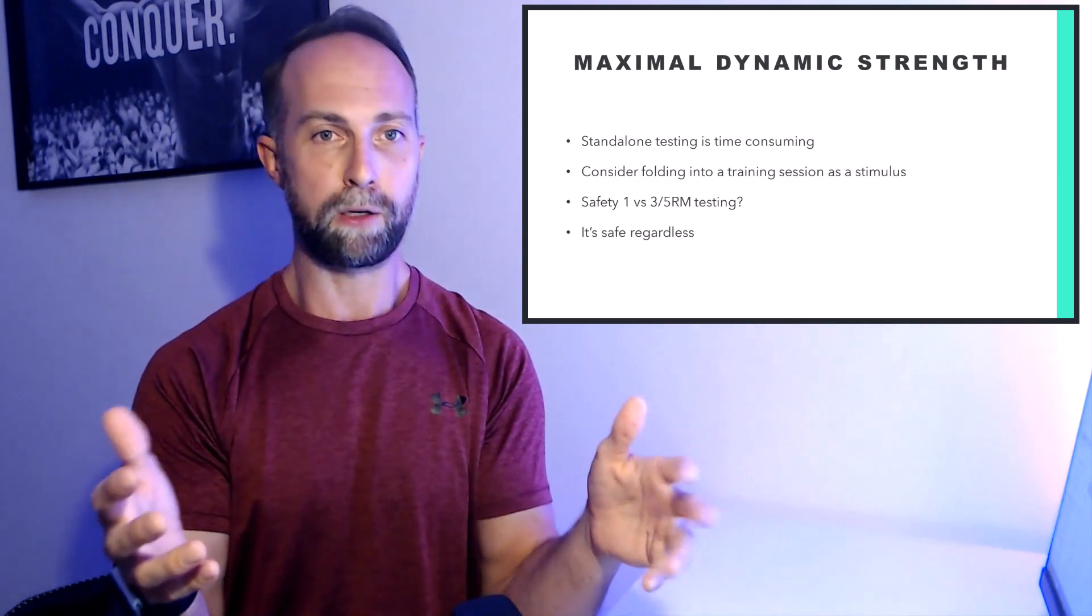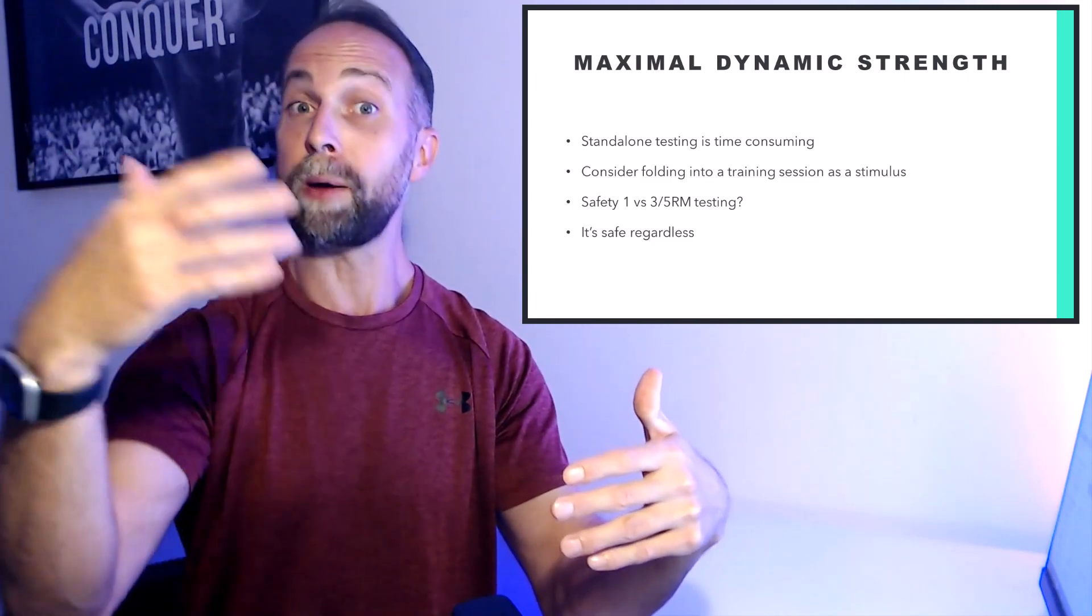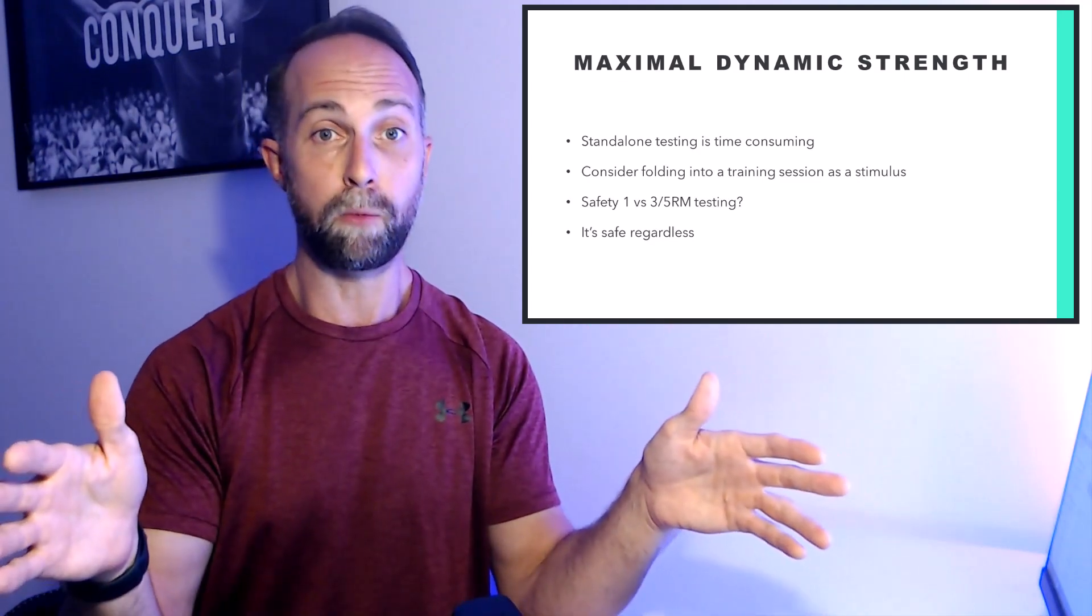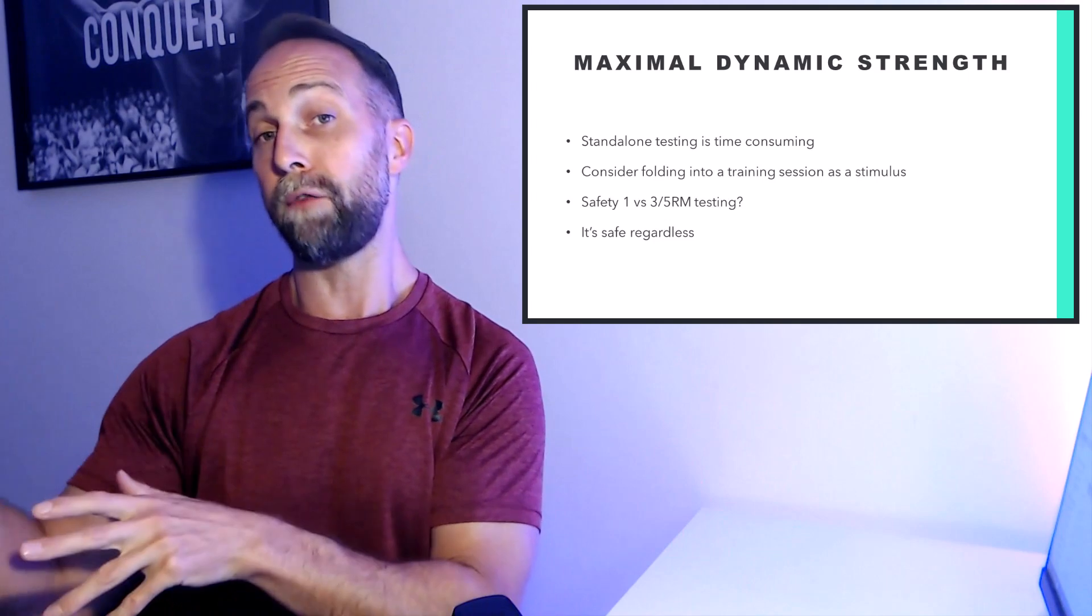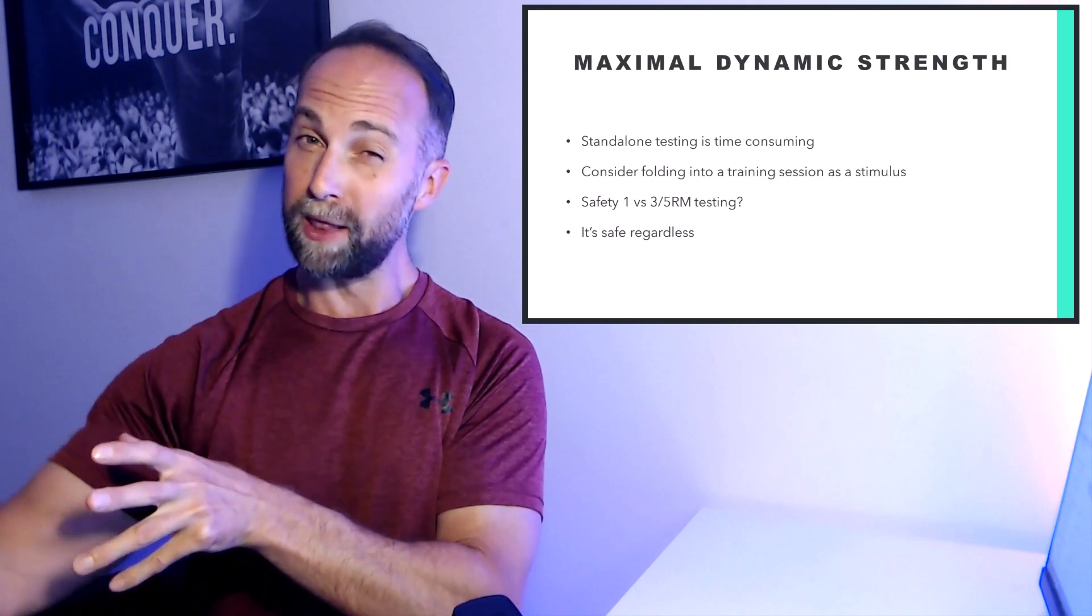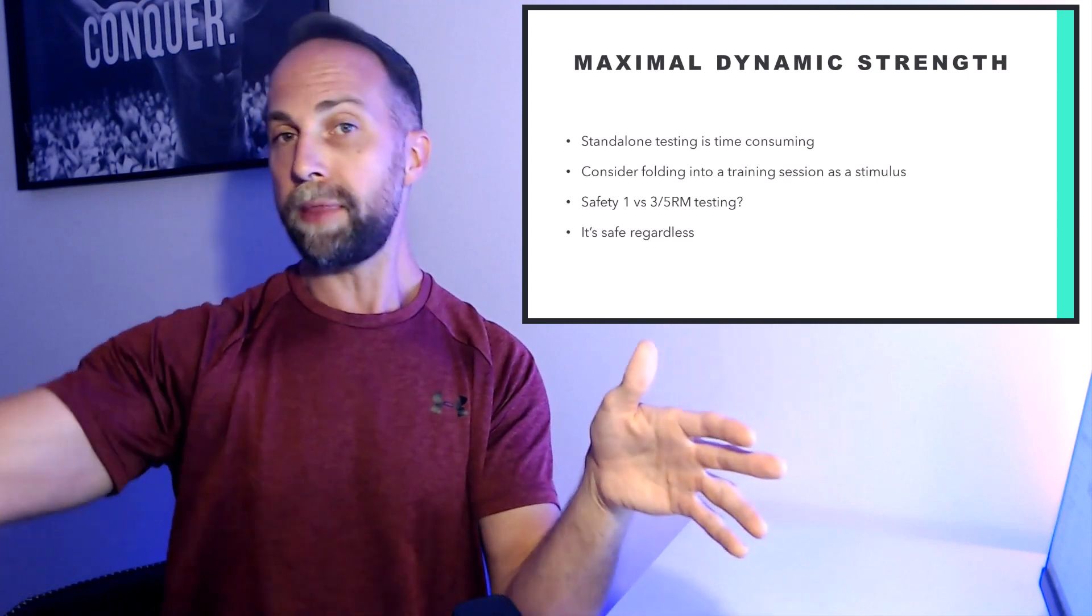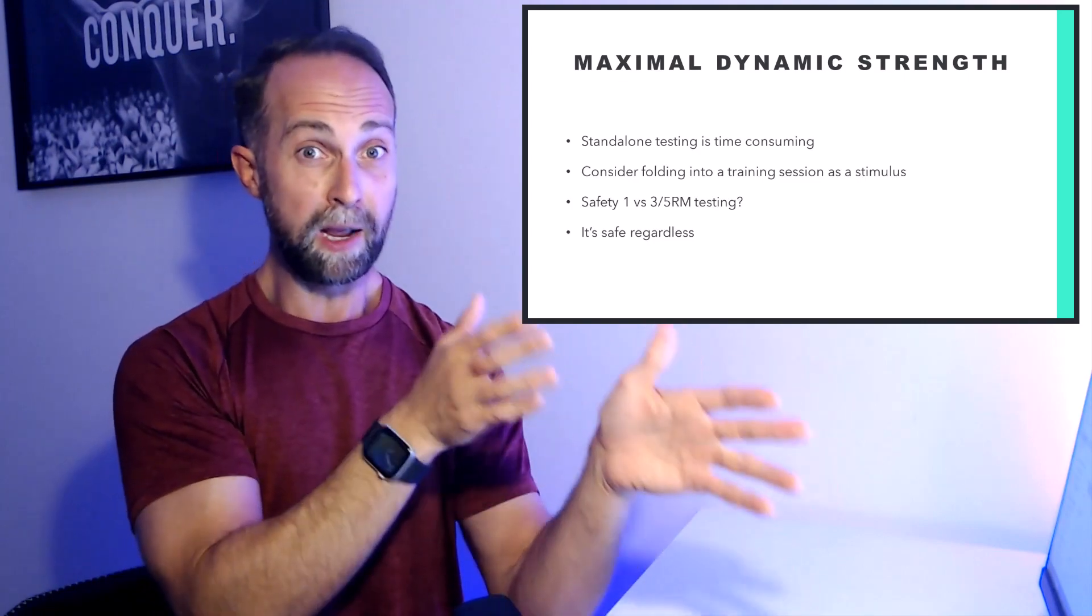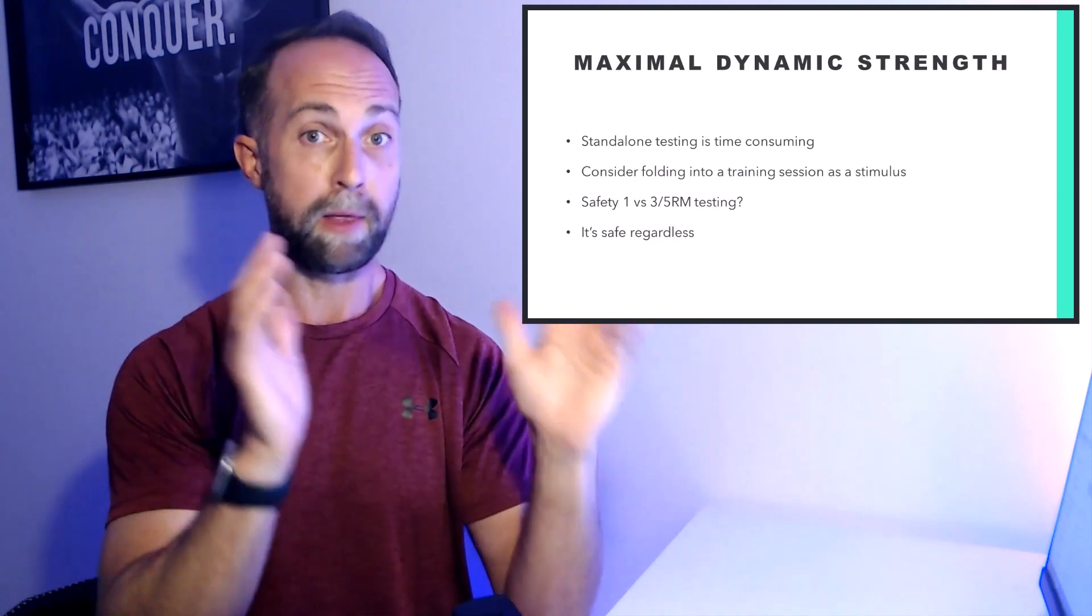If you consider how long it would take to do a single rep and work up to that weight, with a 3 to 5 minute break between attempts, by the time you get your 1 RM score, you could be 30 minutes into the workout and haven't had much training stimulus at all. If you go a 3 or 5 RM, you can get a training stimulus and a test score, but you may start to move a little bit away from what the 1 RM is actually assessing, which is pure maximal dynamic strength. Nonetheless, the 3 or 5 RM is still valid.